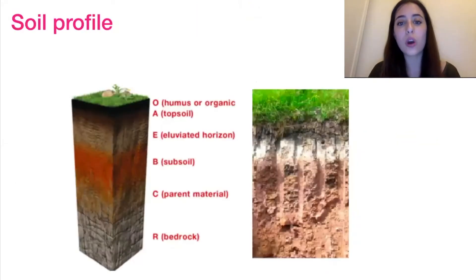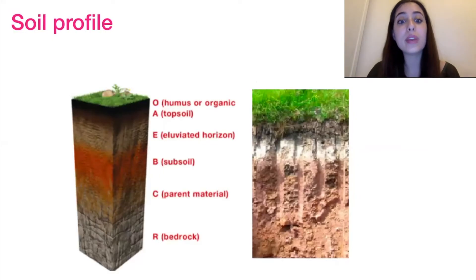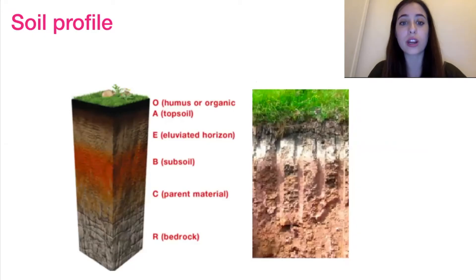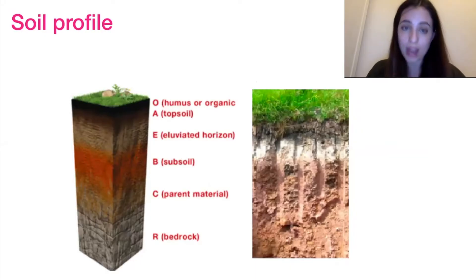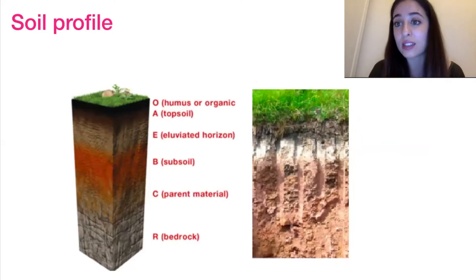And this is what a soil profile looks like. The IB want you to be familiar with the different layers and be aware of how they change through the layers, starting with the bedrock, moving to the parent material, subsoil, alluviated horizon, and then the topsoil. Just by looking at this image, you can see how the consistency and what's going on in each of these layers is vastly different.